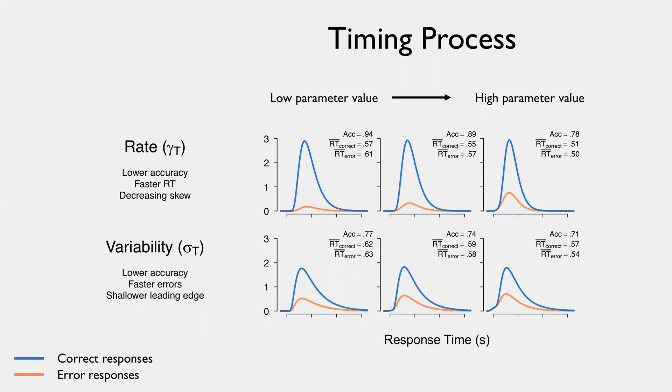But what we now get is some differences in the timing process. So we have some parameters here that we can then test against data. So qualitatively, when we increase the rate of the timing process,